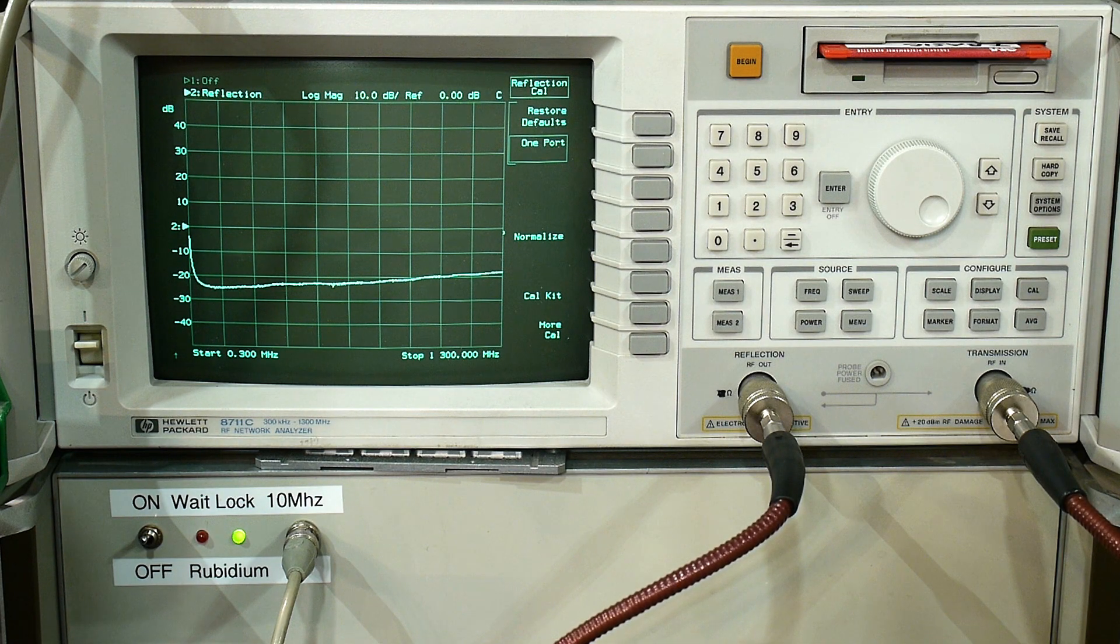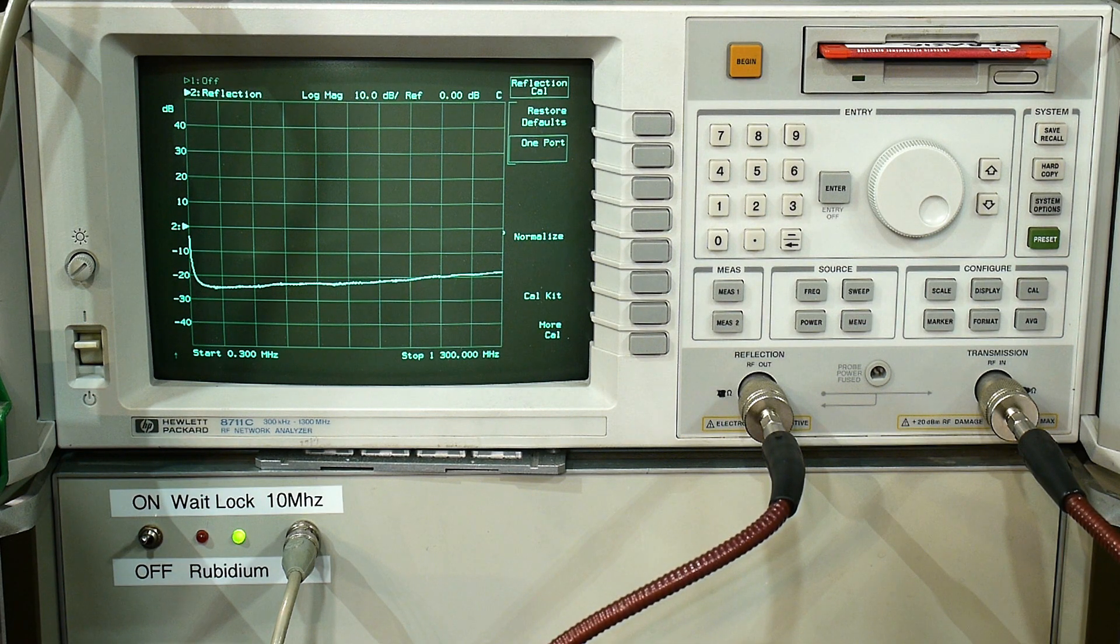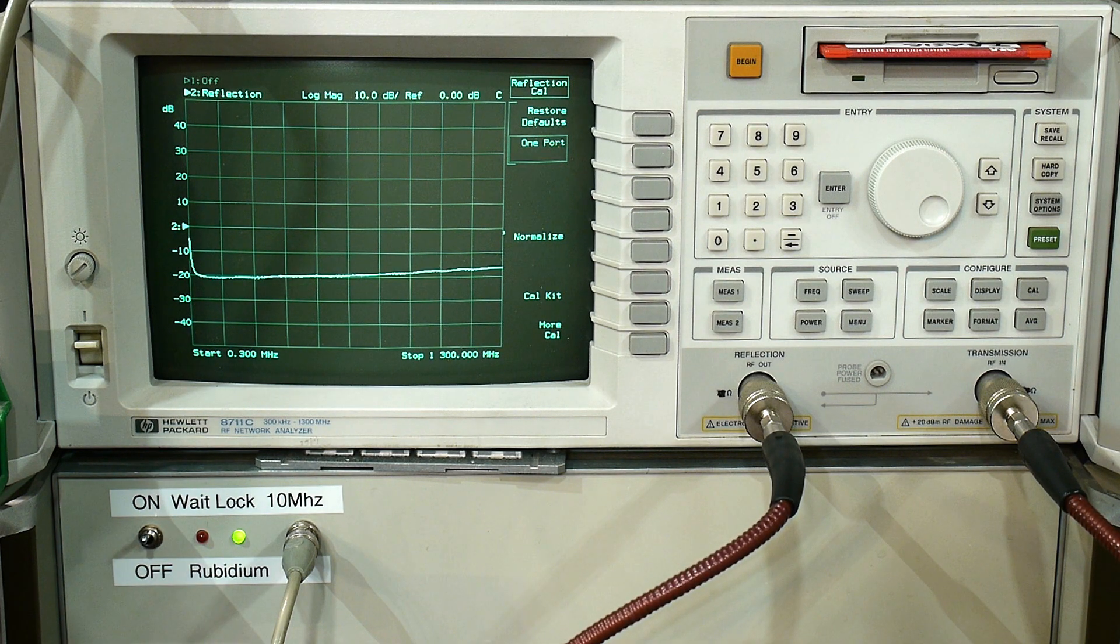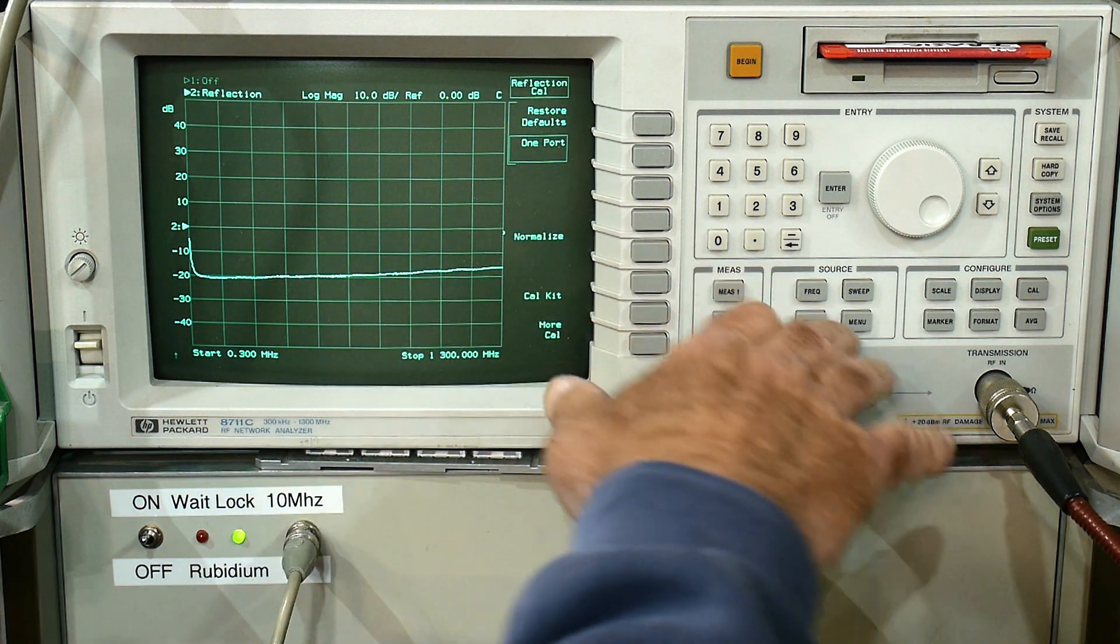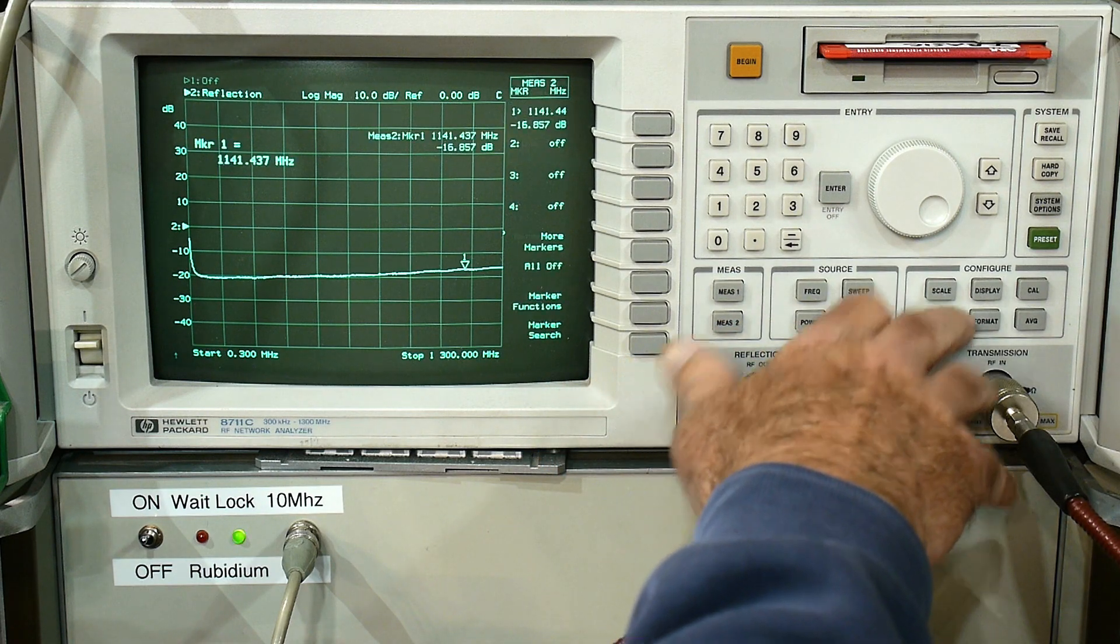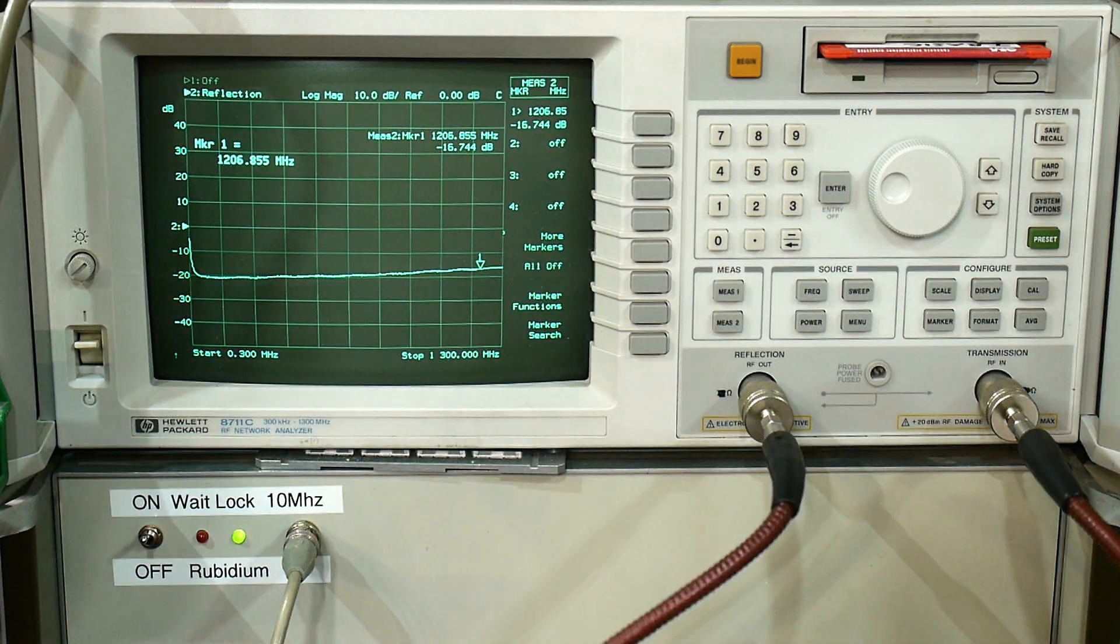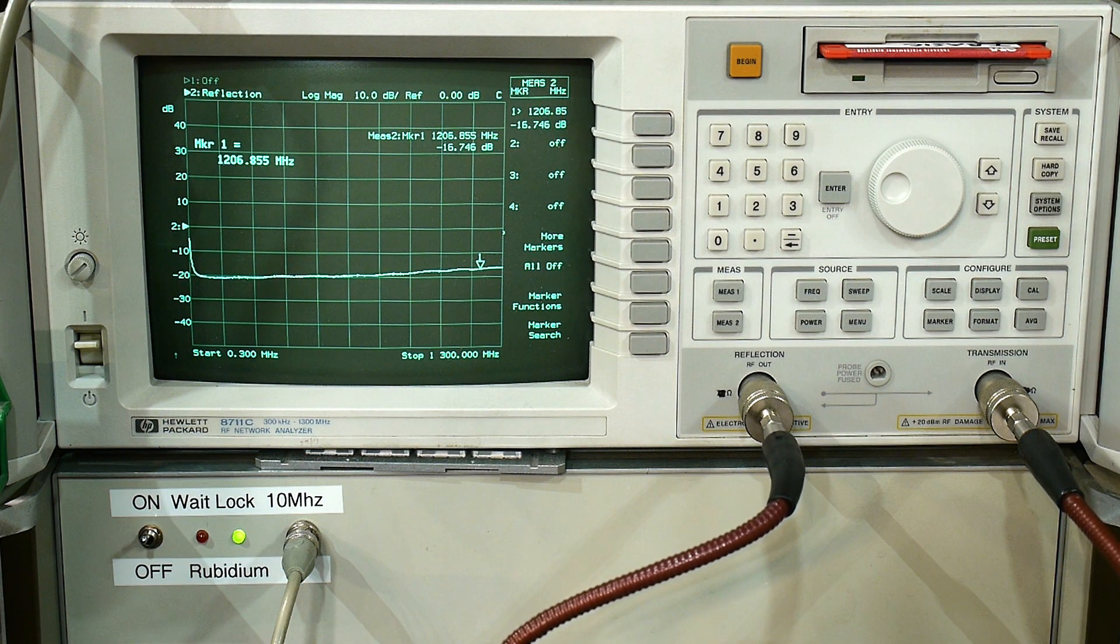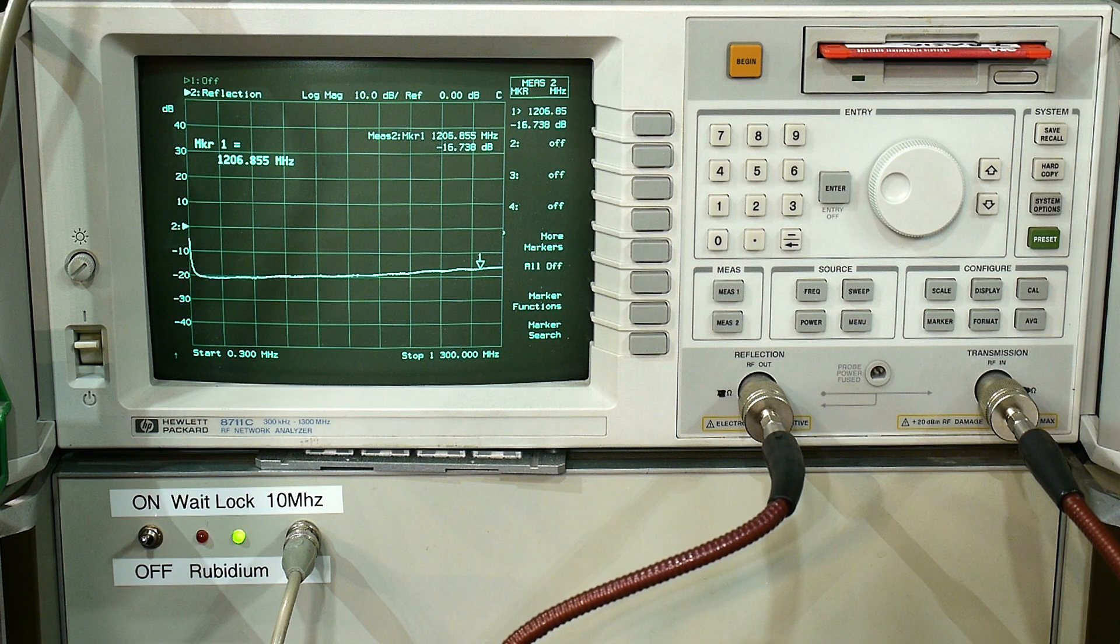Let's go to 20, 20 dB. Starting to fall off a little bit there. Marker. Yeah, minus 16 return loss. Not great, not terrible. Let's go to minus 10. About the same.